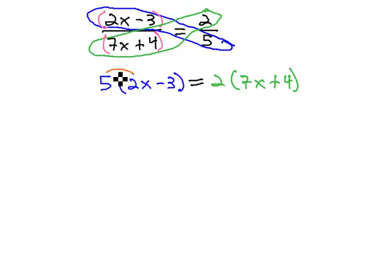We can solve this general equation by first distributing through the parentheses, giving us 10x minus 15 equals 14x plus 8.